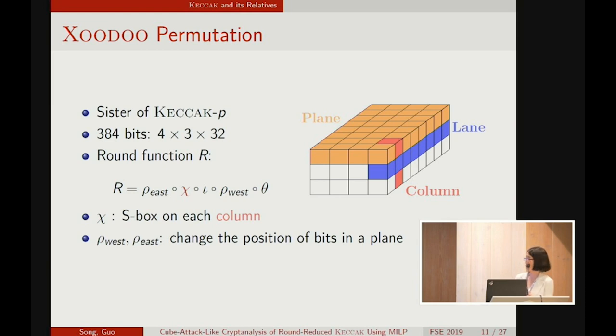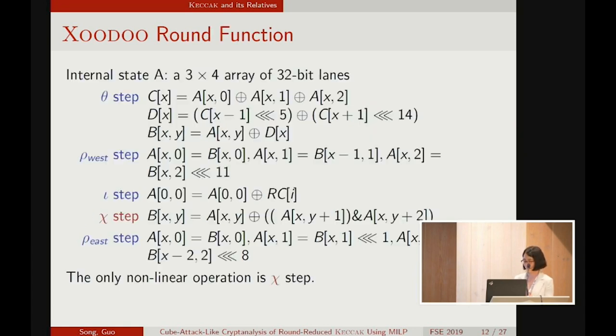However, the theta and the chi are still similar. Chi applies an S-box, now on the column. And the rho west and the rho east change the bits within a plane. Also, the mathematical expressions for the XOODOO round function.